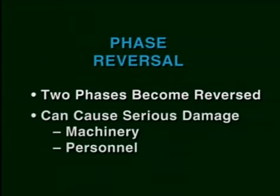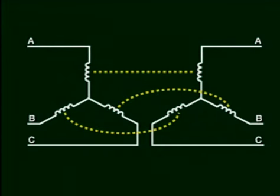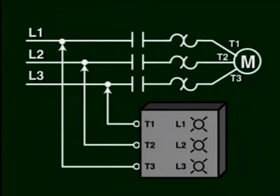A reversal in phase happens if only two phases become reversed and can cause serious damage to machinery and personnel. This can happen if a transformer or other power distribution equipment is being replaced or added to existing machinery and its phase sequence was not reinstated in exactly the same manner. If this is the case, a short circuit will occur when the equipment is put in line. Reversing phases will also result in reversing the direction or rotation of motors, which, if not properly controlled, could create serious injury to personnel and damage to equipment.